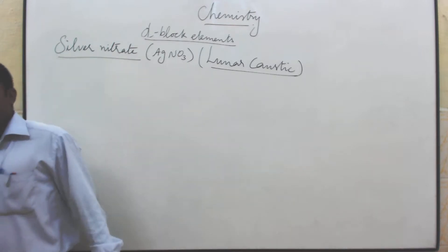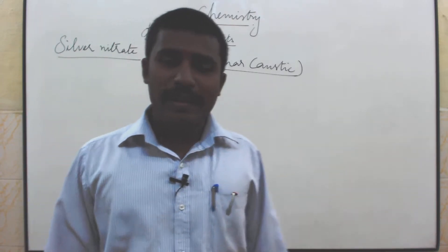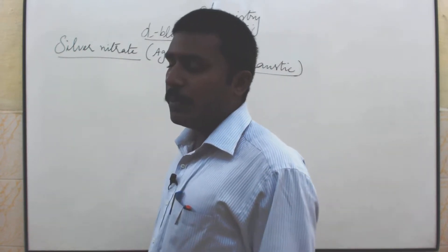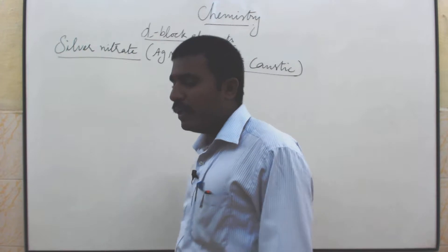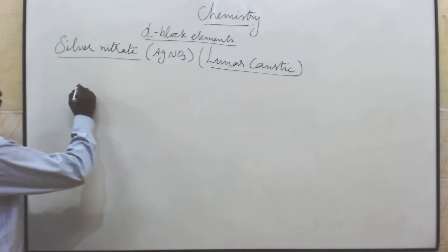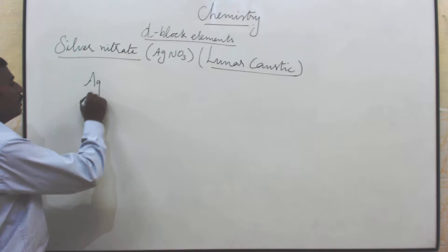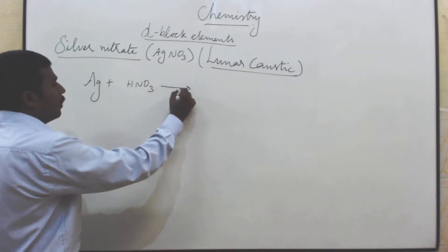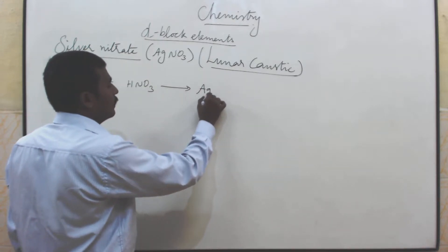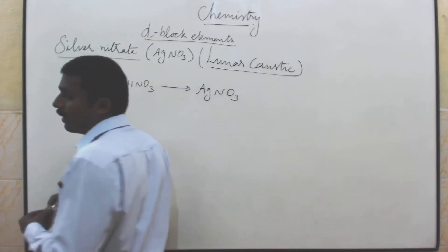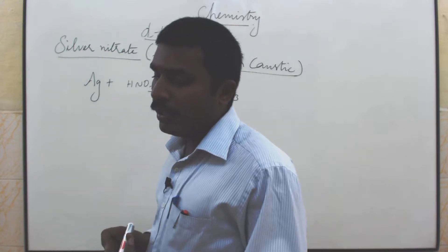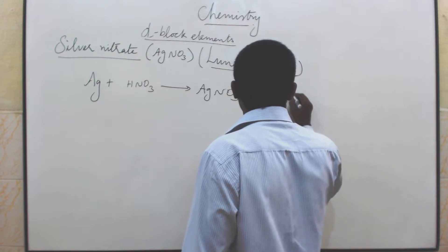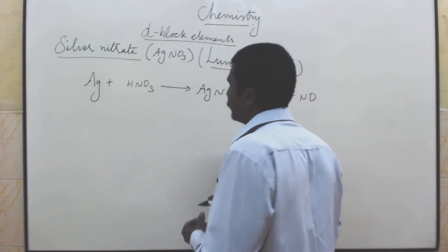How to prepare silver nitrate? Silver reacts with dilute nitric acid to give silver nitrate. Silver nitrate is prepared by dissolving silver in dilute nitric acid. Silver reacts with dilute nitric acid to get AgNO3, along with water and nitric oxide.